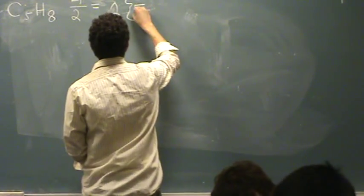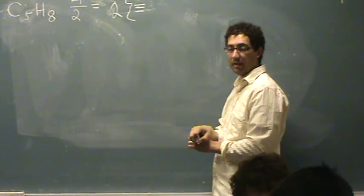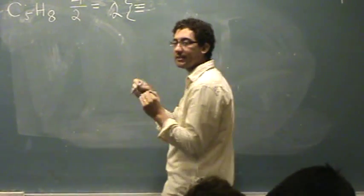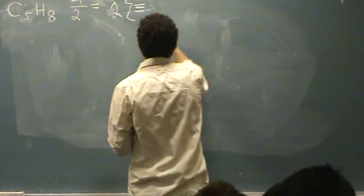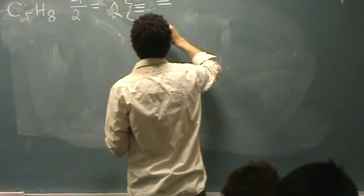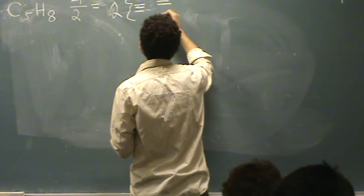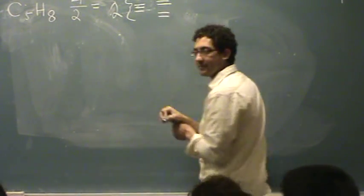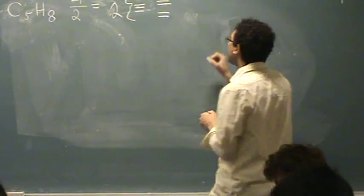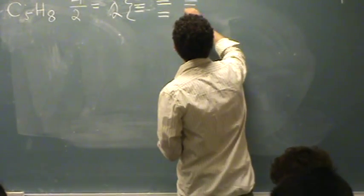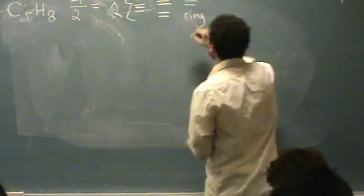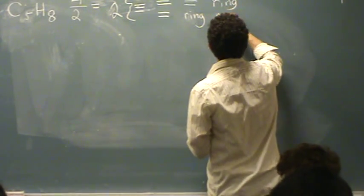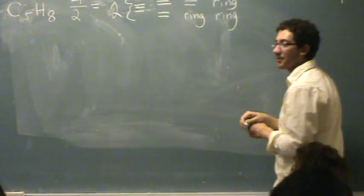So two degrees of unsaturation, that's a little painful. That could mean a lot of things. That could mean you have a triple bond. All kinds are two degrees of unsaturation. Or it could be a combination of one degrees of unsaturation. So you could have a double bond and another double bond, one and one. You could have a double bond and a ring, or you could have two rings. I think I picked it really hard.